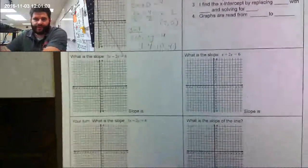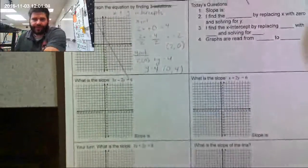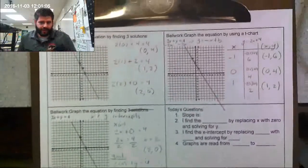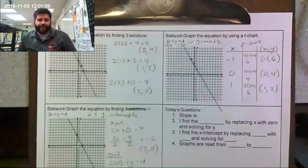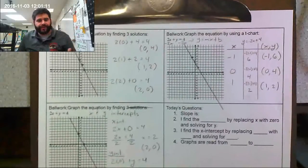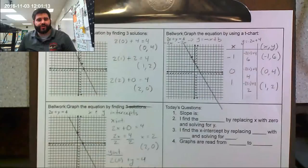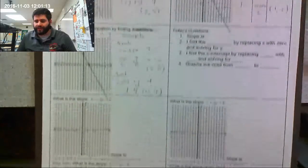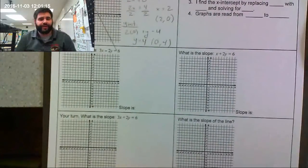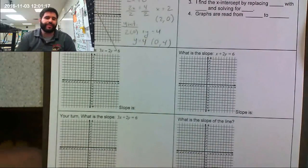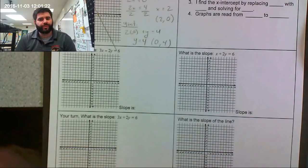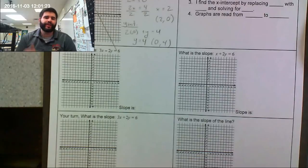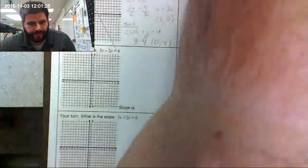If I zoom out, all three graphs look the same — and they are the same. This has been Mr. Anderson's Algebra 1 lessons. We learned how to graph linear equations three different ways. I hope this helps you out. Please leave a like, subscribe, and enjoy your day. Peace.